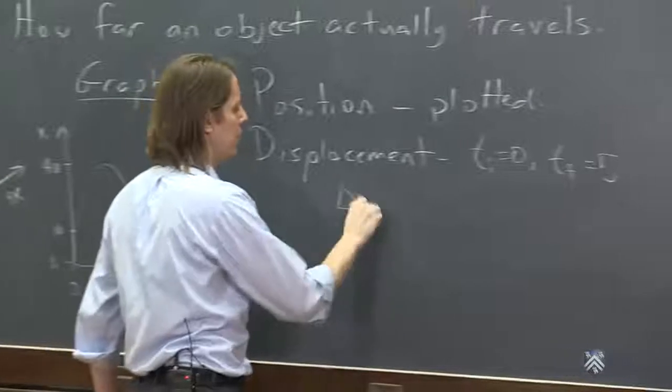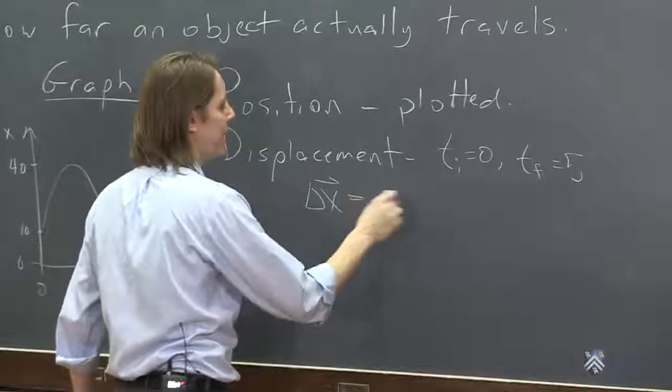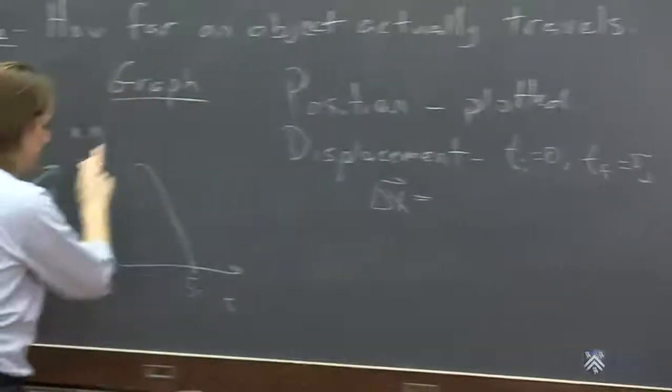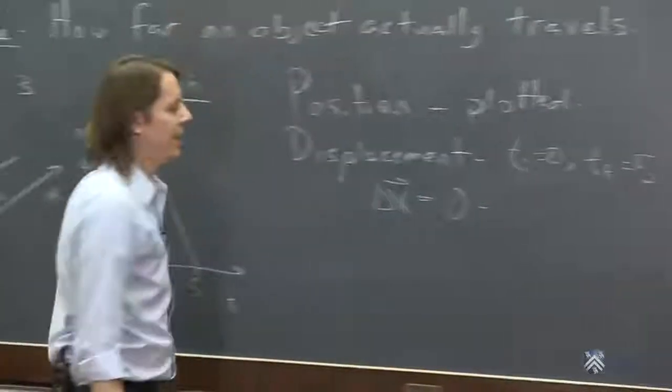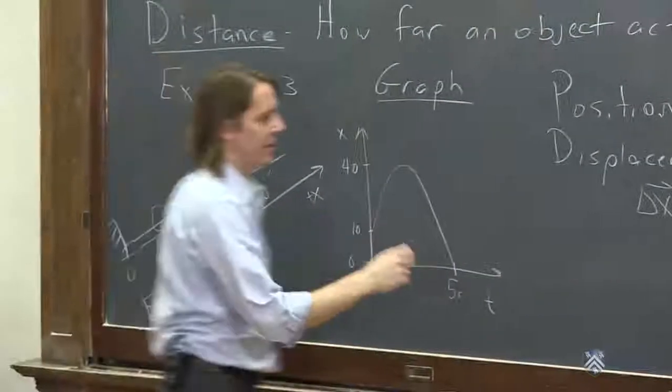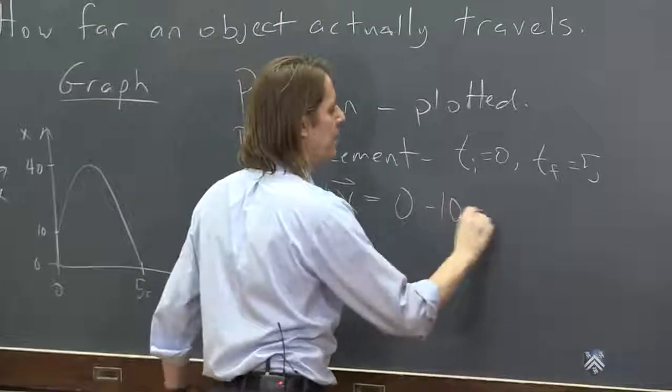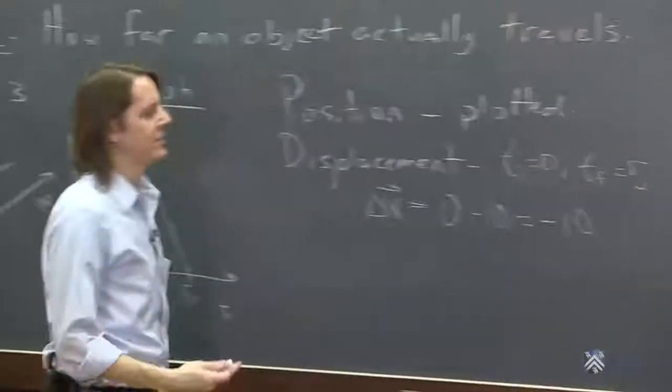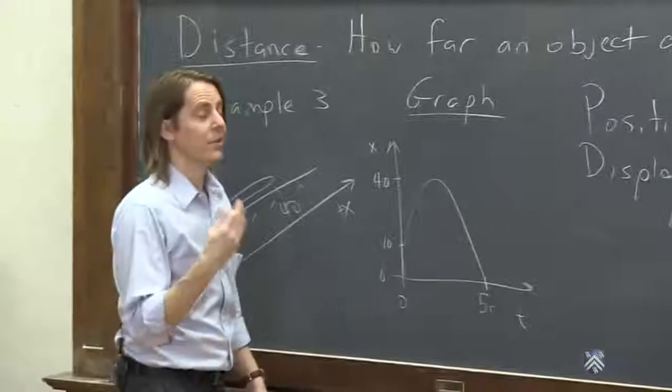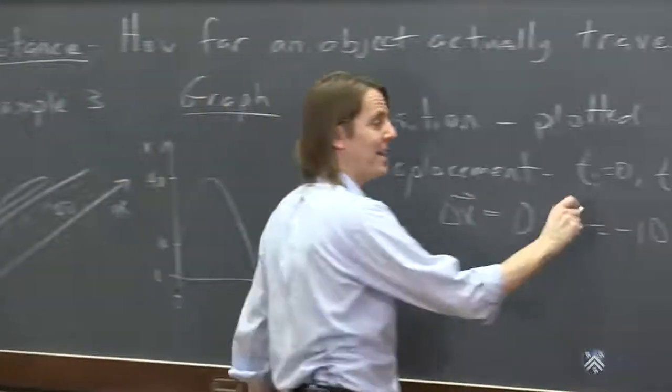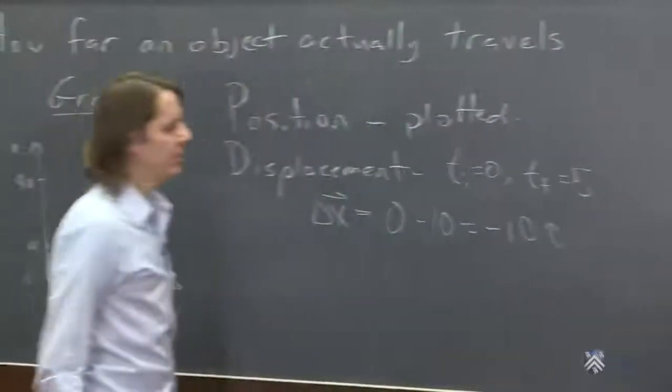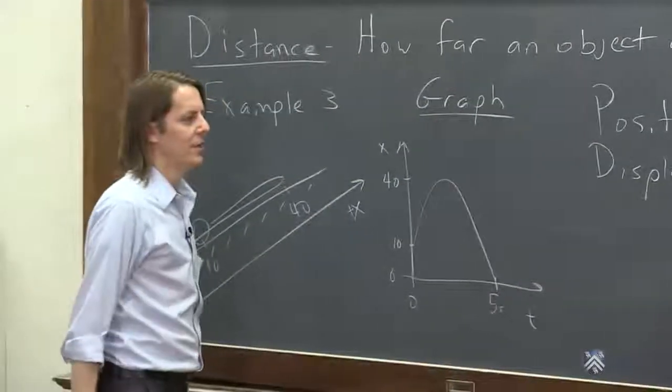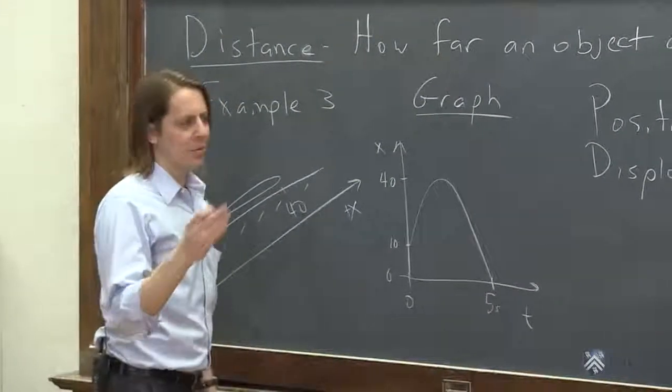Delta x equals what? x final, which was zero minus x initial, which was 10. Minus 10, we get zero minus 10, negative 10. And since it's a vector, and I put a number, and I can't put a vector hat on a number, that'd be kind of weird. I'm going to put my i hat. It just means along the x-axis. So the displacement was negative 10.